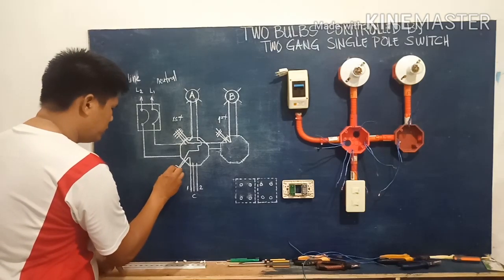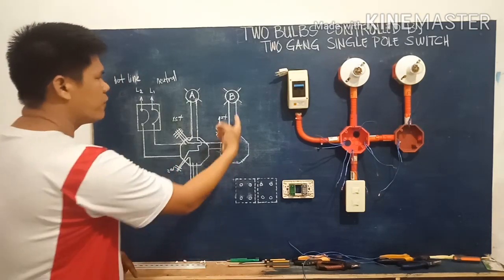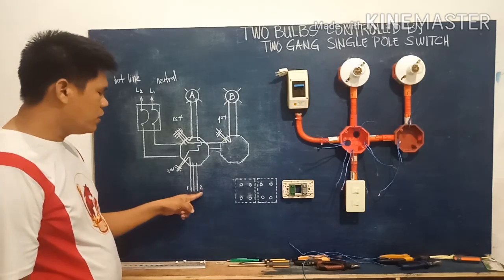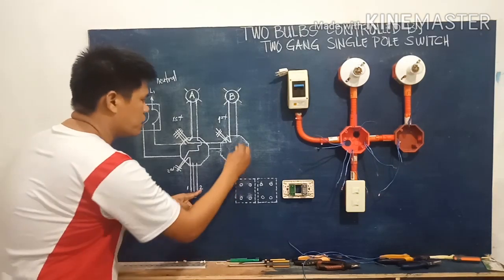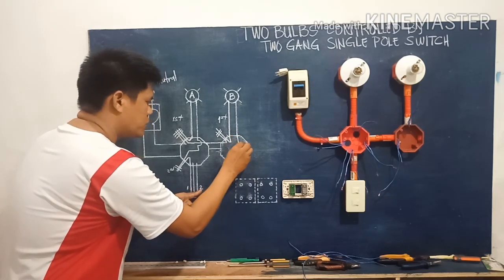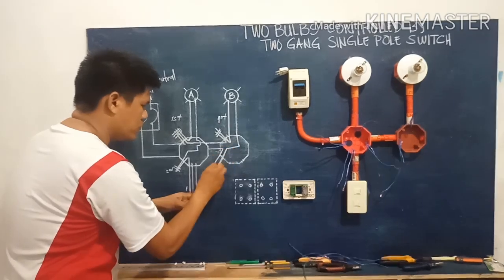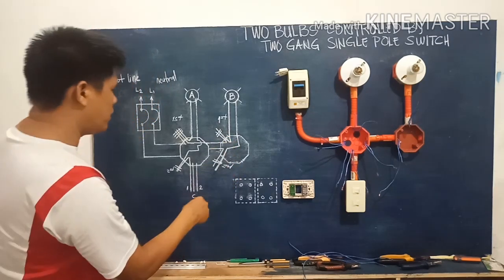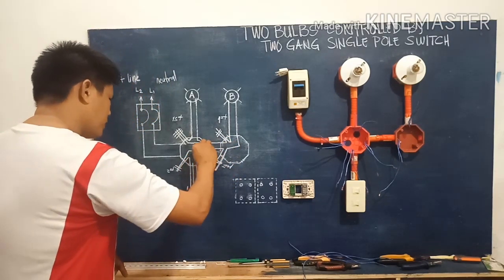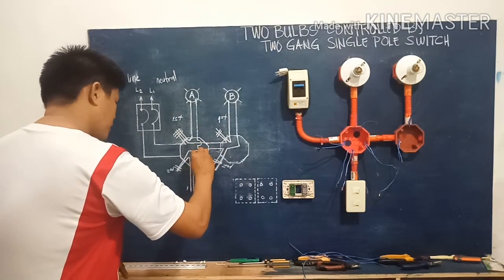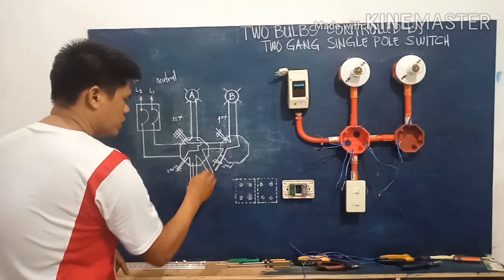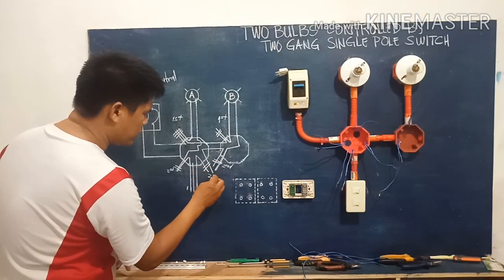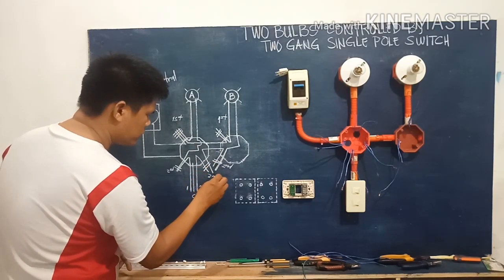This is our second cycle. For bulb B, we also control it using the two-gang single pole switch, intended for line two. This one is distributed here first, so two wires for the second cycle. We have one, two for the second cycle — still on the second cycle.